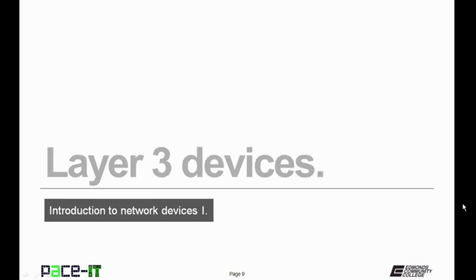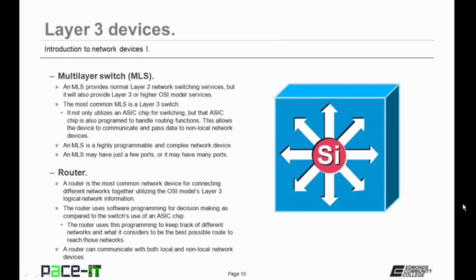Now let's move on to Layer 3 devices. First up is the multi-layer switch. A multi-layer switch provides normal Layer 2 network switching services, but it will also provide Layer 3 or higher OSI model services. The most common multi-layer switch is a Layer 3 switch. It not only utilizes an ASIC chip for switching, but that ASIC chip is also programmed to handle routing functions. This allows the device to communicate and pass data to non-local network devices. A multi-layer switch is a highly programmable and complex network device and may have just a few ports or many.